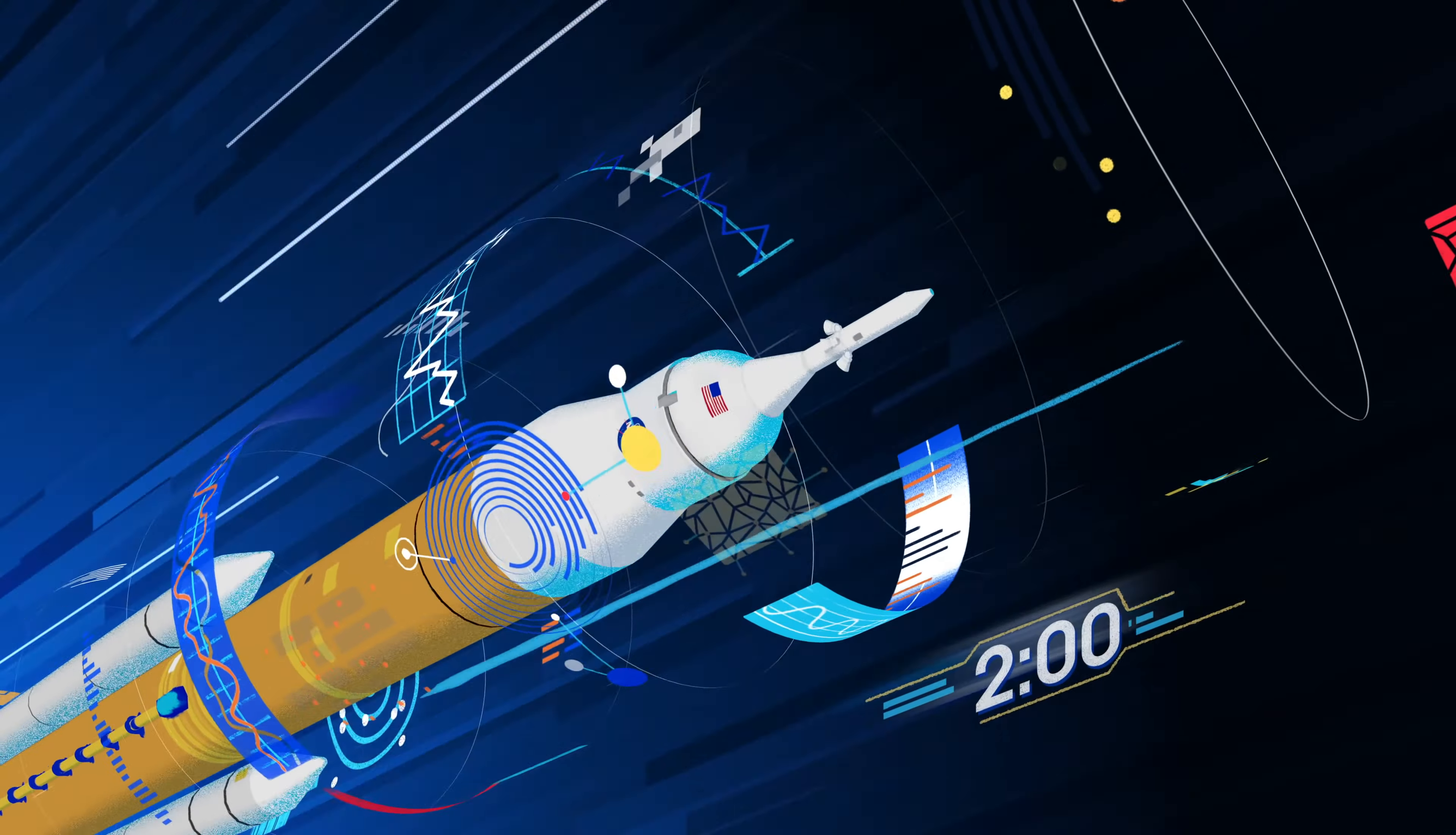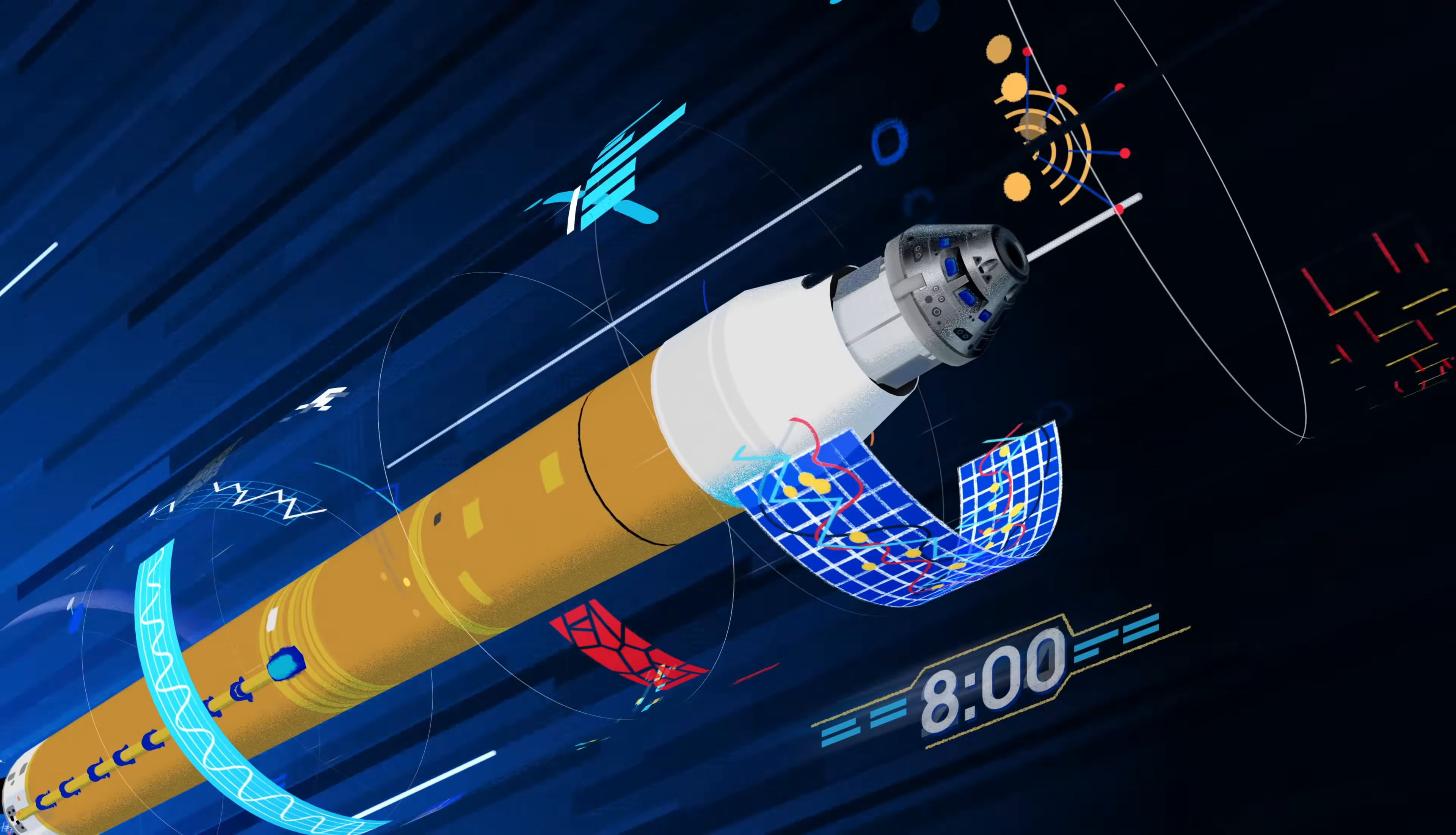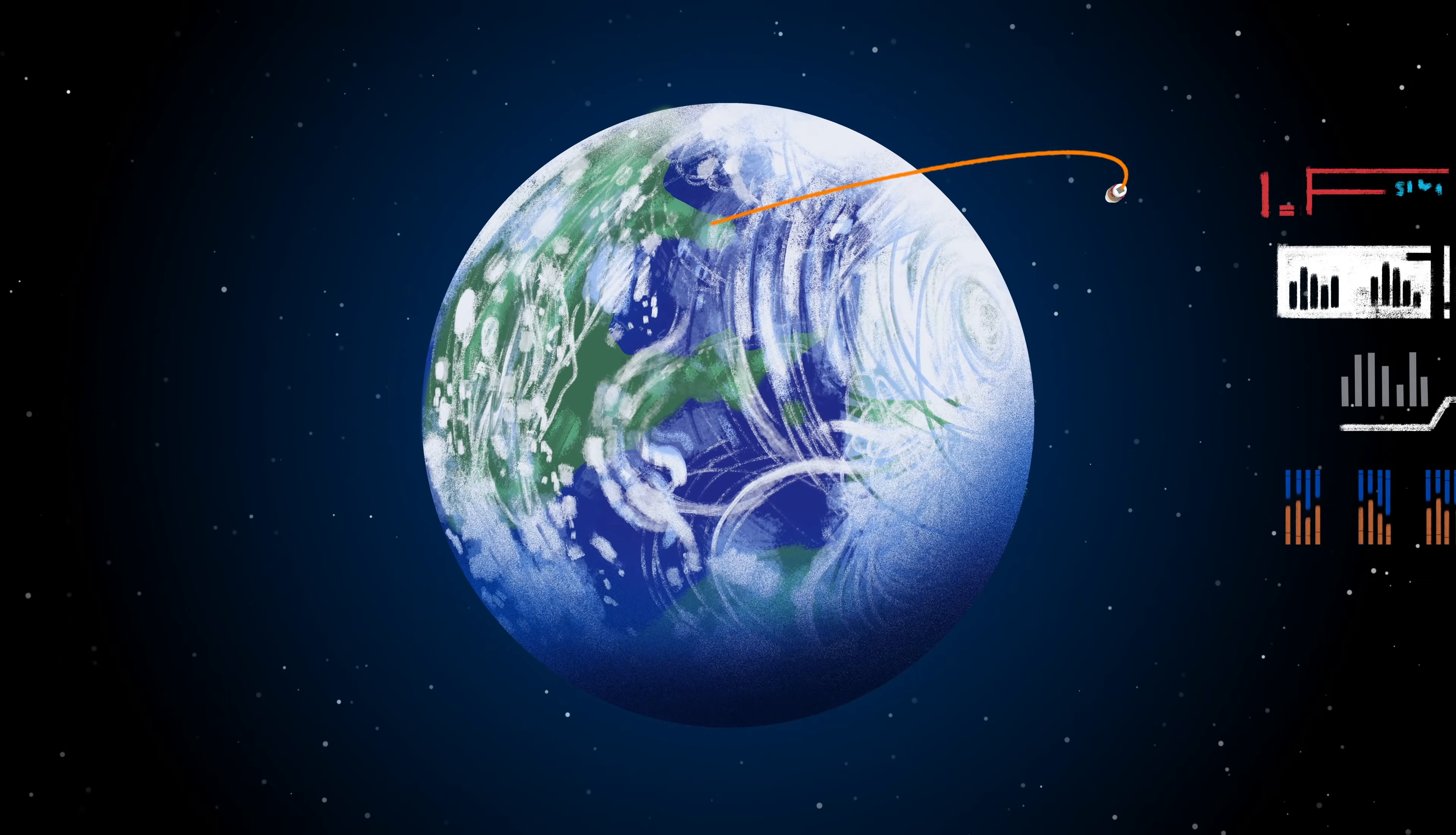Two minutes after ignition, the solid rocket boosters are spent and released. Eight minutes after launch, the core stage is depleted and separated. The upper stage fires briefly, placing Orion into a parking orbit around the Earth.